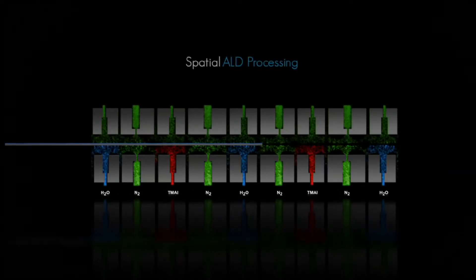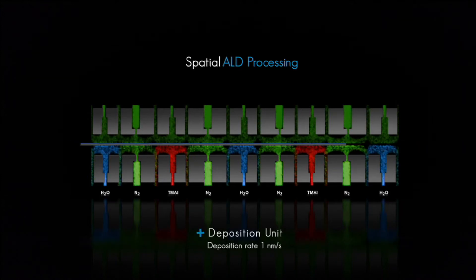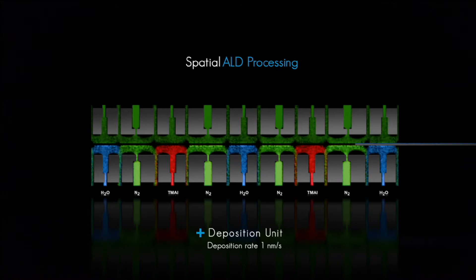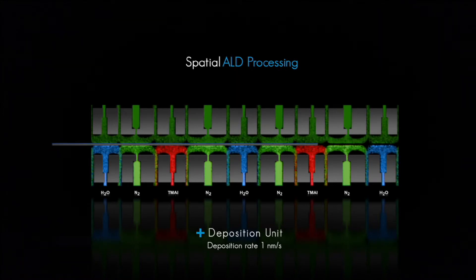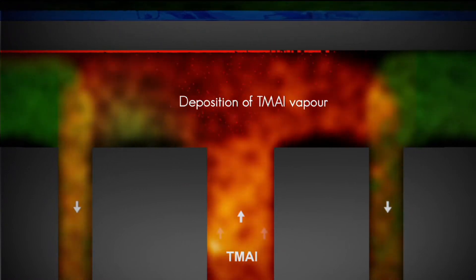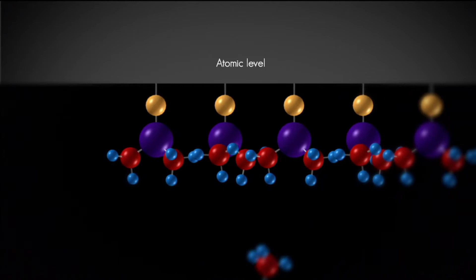The two process gases are separated by nitrogen gas curtains to prevent any contamination. The arrangement of the different gas compartments allows the ALD process to work in both directions. When the wafers arrive at the TMA processing compartment, trimethylaluminium forms a monolayer on the surface. It is represented here at atomic level.